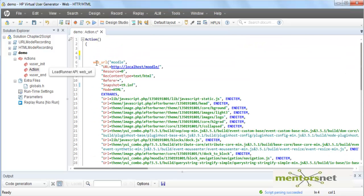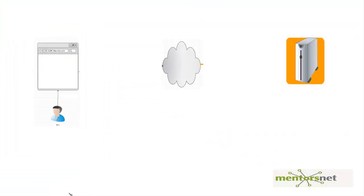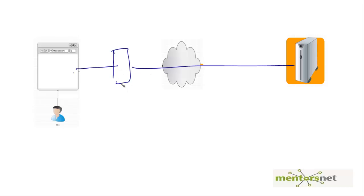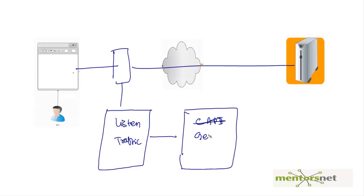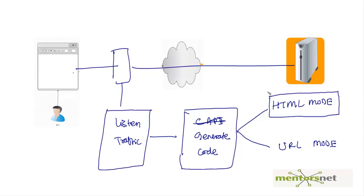There are five C API calls that VUgen gave us in the script. This is how it works: your browser is on one side, VUgen sits between the client and the server, it listens to traffic, and then generates code. Code generation can happen in two ways — one is called HTML mode, and number two is called URL mode.